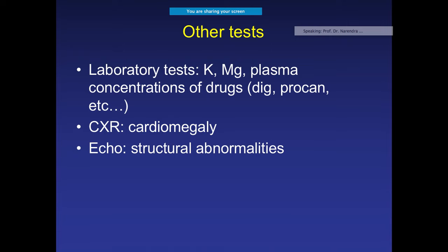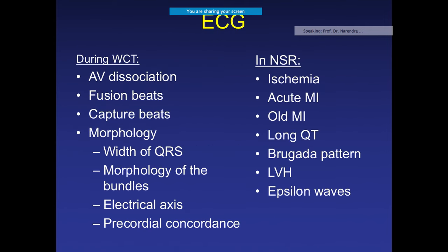Useful investigations include serum potassium, magnesium, drug serum concentration levels, and echocardiography for structural abnormalities. On ECG, look for all diagnostic signs: fusion beats, capture beats, QRS width, bundle morphology, electrical axis, and precordial concordance. Precordial concordance — if V1 to V6 are all completely positive or all completely negative — points strongly to VT.